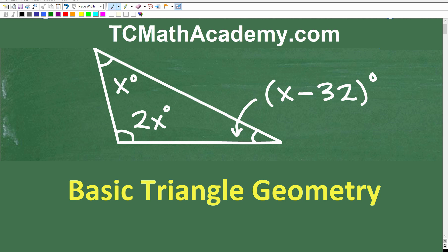Okay, so how much do you actually understand about a simple shape like a triangle? Well, if you have a pretty good understanding of triangles, then you should be able to answer this question. So we have three angles in this triangle. This angle right here is x degrees, this angle here is 2x degrees, and this angle right here is x minus 32 degrees. And what we want to do is find the actual angles of this triangle.